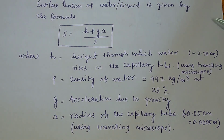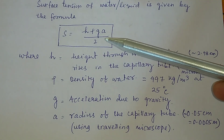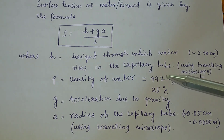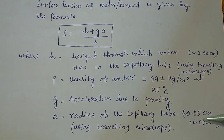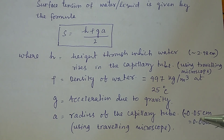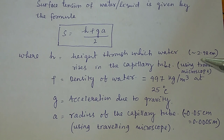Surface tension of water is given by the formula S equal to H rho G A divided by 2, where H is the height through which water rises in the capillary tube. For a capillary tube of radius of the order of 0.05 centimeter, I have found that the height through which water rises in the capillary tube is nearly equal to 2.98 centimeter.